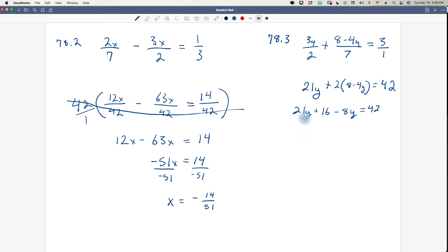I'm going to distribute the second term now. So 21y plus 16 minus 8y equals 42. So 21 minus 8y is going to be 13y. I'm going to swim this to the other side, and that's going to give me 13y equals 26. And 26 divided by 13 is going to be 2. So y equals 2. If you want to plug 2 into the original equation, you can go right ahead, but my answer matches the book, so I'm confident that it is right.